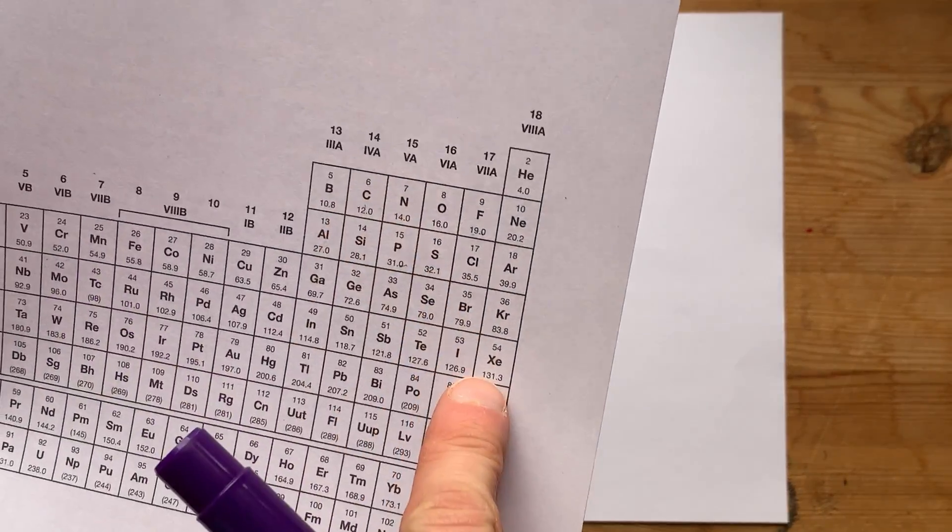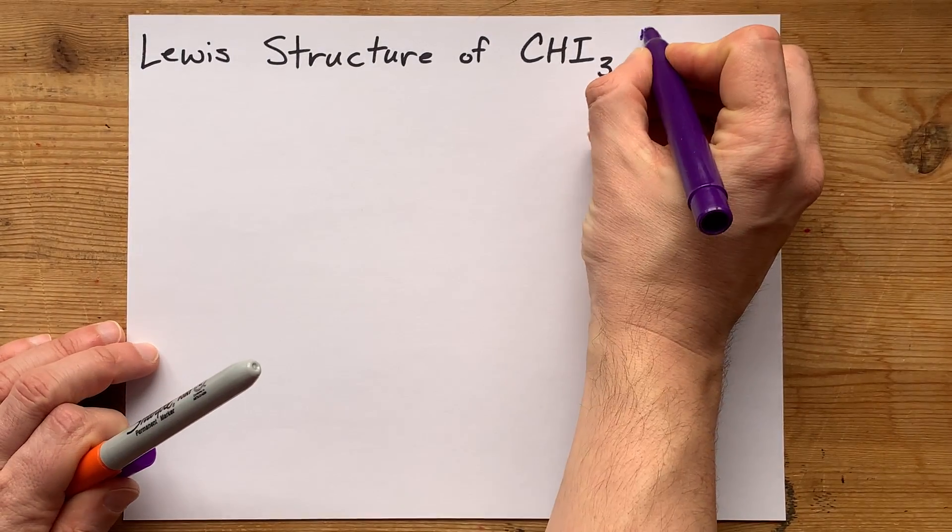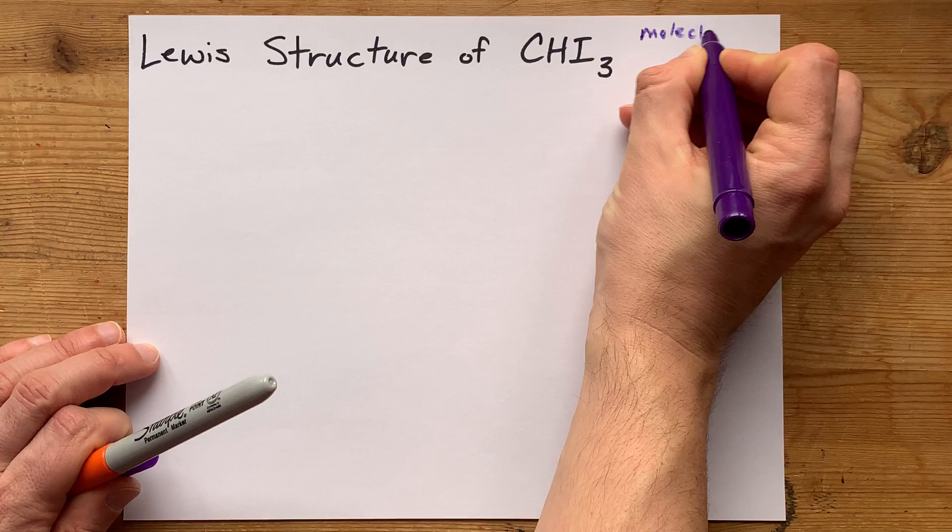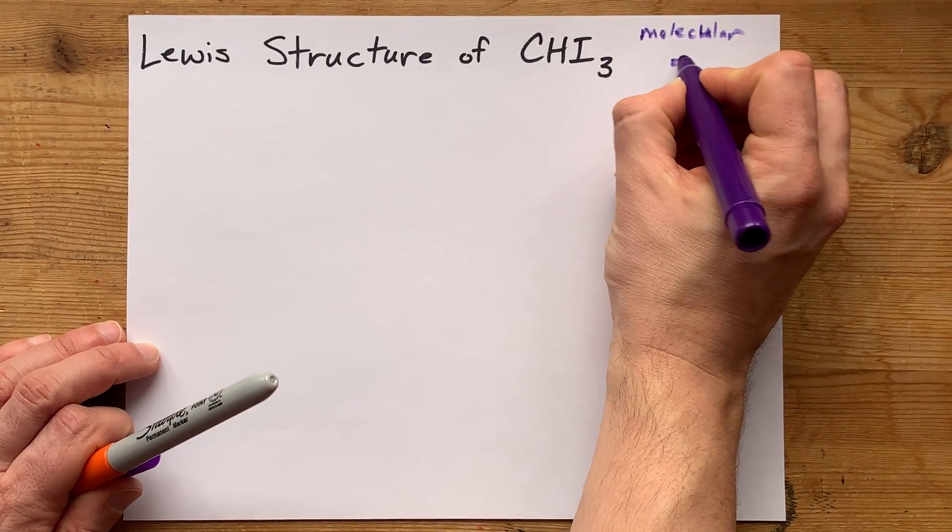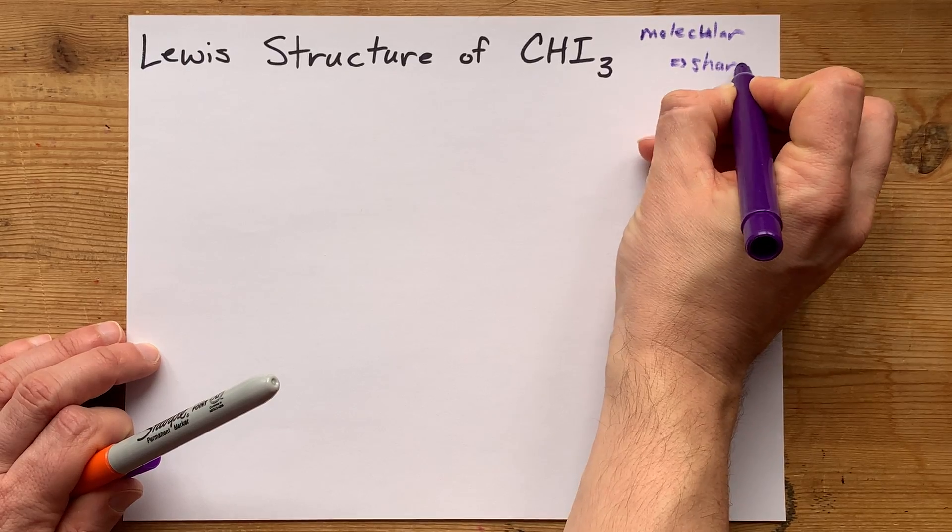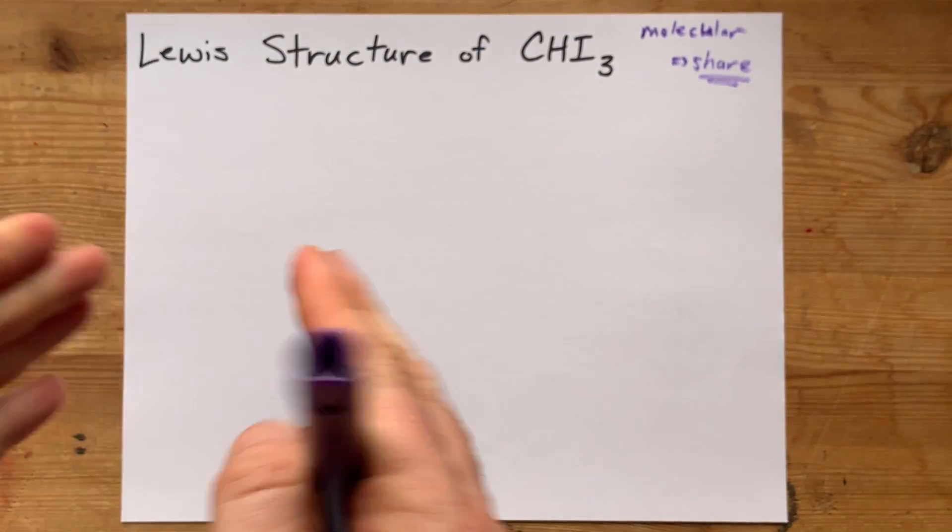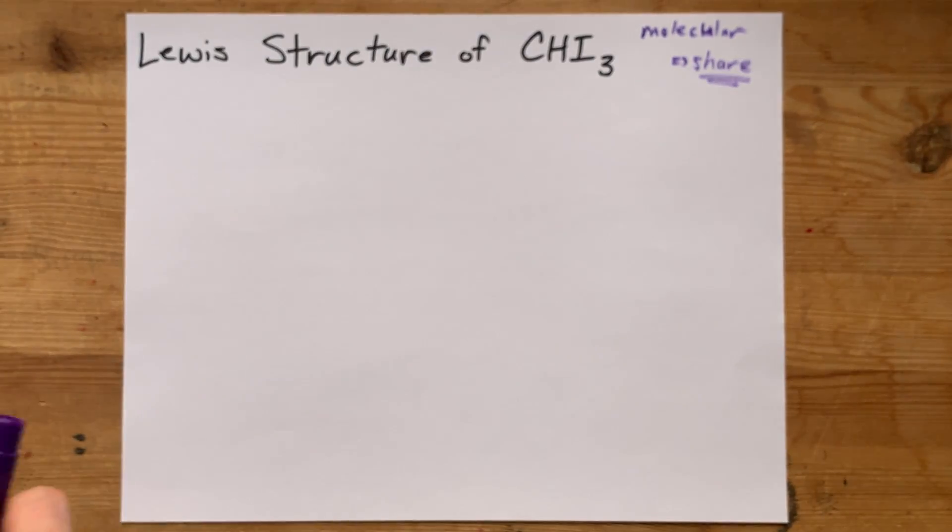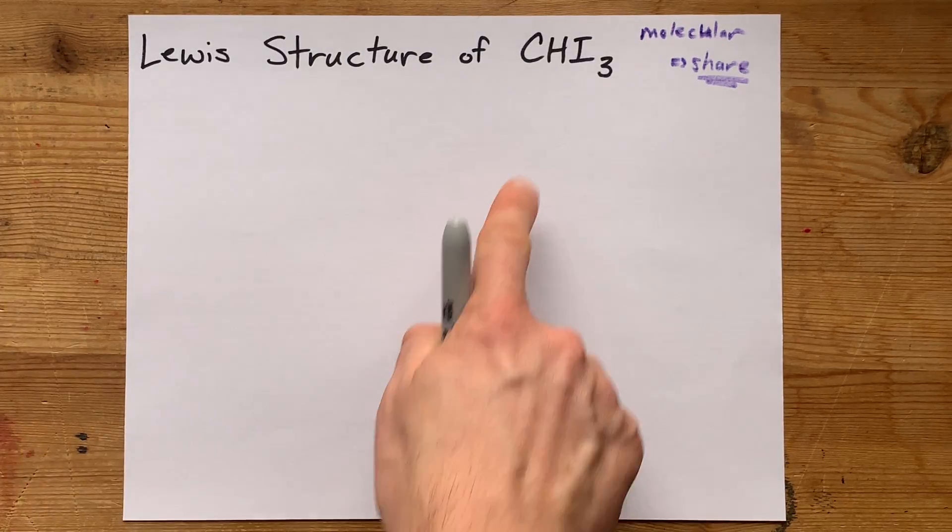Carbon, iodine, and hydrogen are all non-metals. That means when they combine together, they're going to form a molecular compound, and that means there's a sharing of electrons, as opposed to ionic compounds where electrons jump from one atom to another and you get charged particles. Just sharing of electrons here.